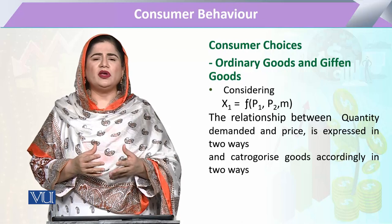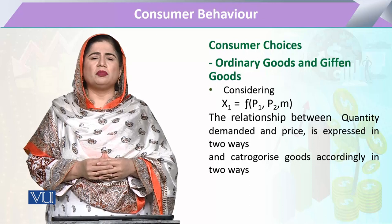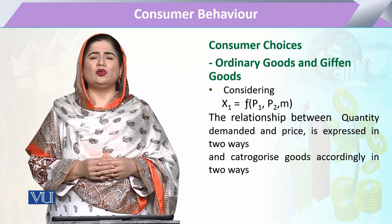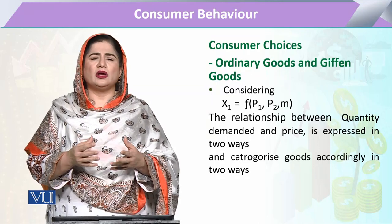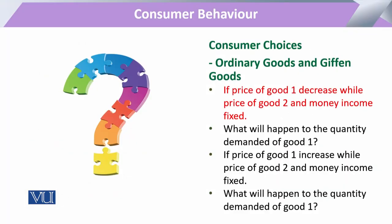When we study the behavior of various commodities related to a change in price, we find that not every commodity follows this principle — there can be variation. So when we consider a consumption bundle where the price of commodity 1 decreases, we keep the price of commodity 2 and the consumer's income constant. The question is: what happens to the quantity demanded of that good and the other good?